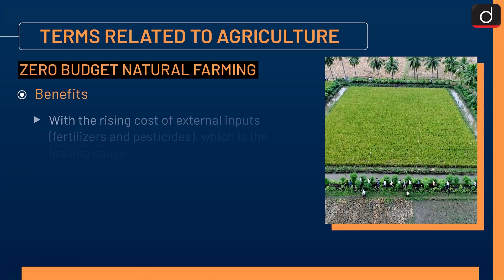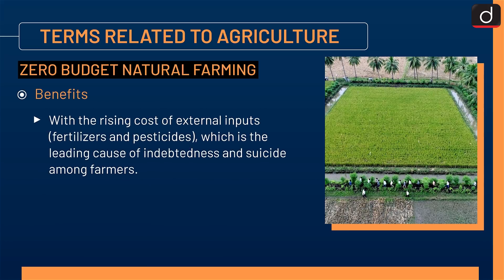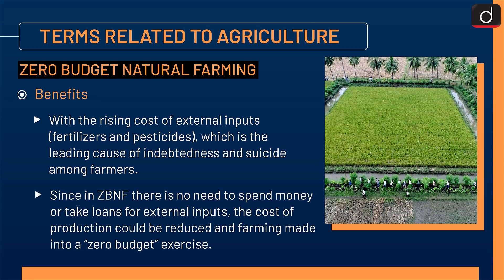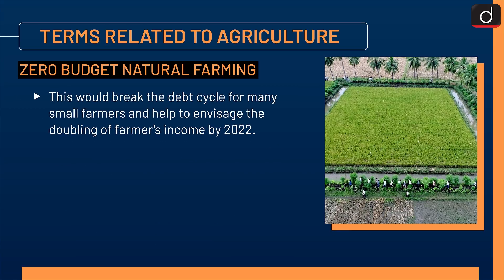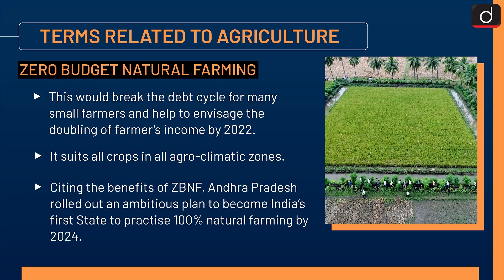It aims to bring down the cost of production to nearly zero and return to a pre-Green Revolution style of farming. With rising costs of external inputs being the leading cause of indebtedness and suicide among farmers, ZBNF reduces the cost of production and makes farming a zero-budget exercise. This could break the debt cycle for many small farmers and help double farmers' income by 2022. It suits all crops in all agro-climatic zones. Andhra Pradesh rolled out an ambitious plan to become India's first state to practice 100% natural farming by 2024.